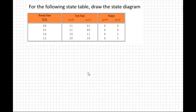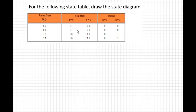Today's question: for the following state table, draw the state diagram. The present state is given as q1, q2: 00, 01, 10, 11. The next state and output are also given. When x=0, state 00 goes to next state 11; when x=1, state 00 goes to next state 01. The output for each state and input value is provided accordingly.